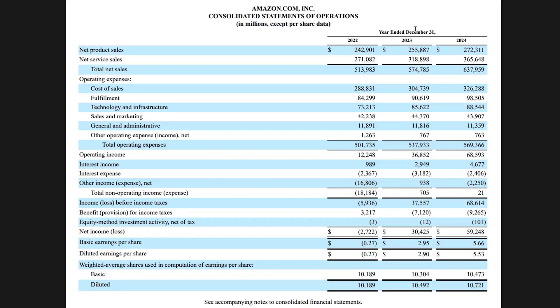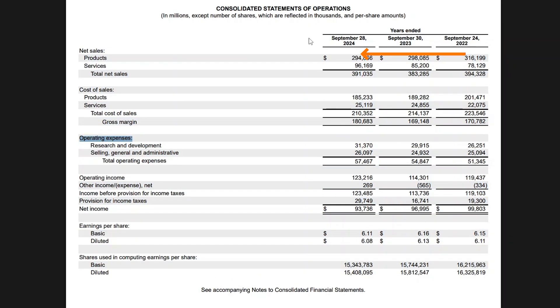In 2022, Amazon had a net loss, but by 2024 that figure has gone all the way up to 60 billion in profit. One common mistake with annual reports: in Amazon's case the columns go from 2022 to 2024, but in Apple's case it's flipped, with the most recent year first. So when comparing companies, it's important to make that distinction.